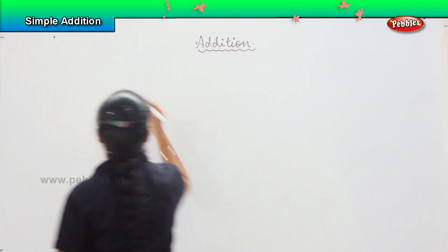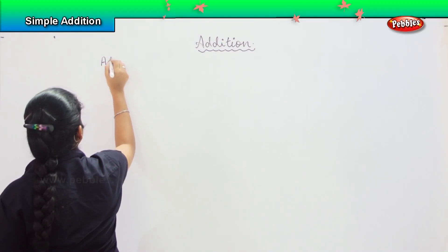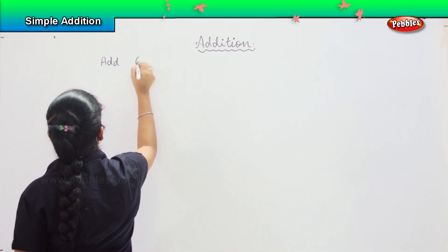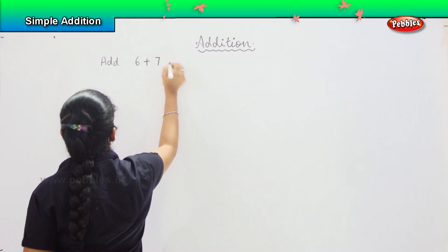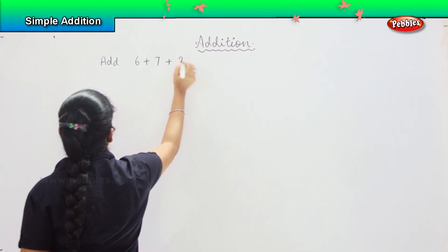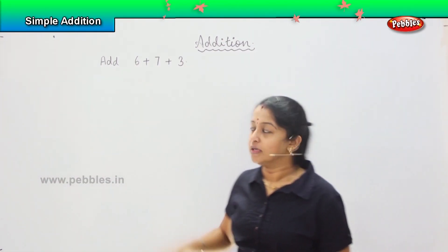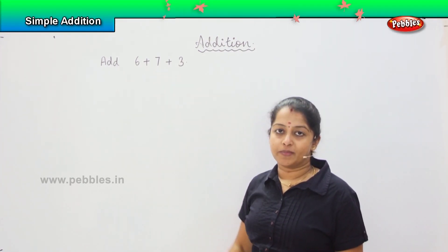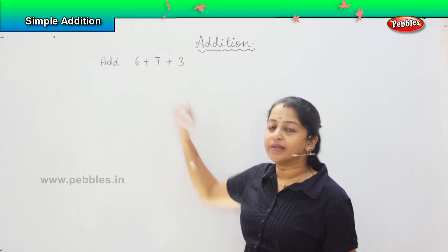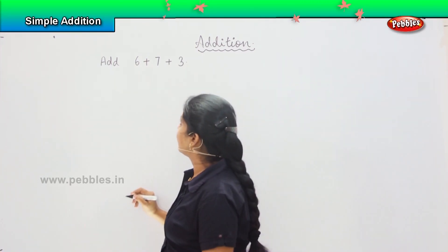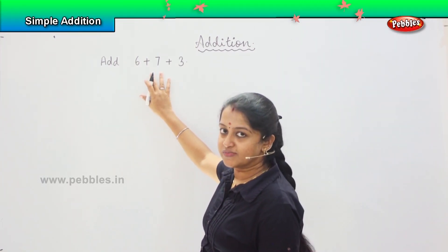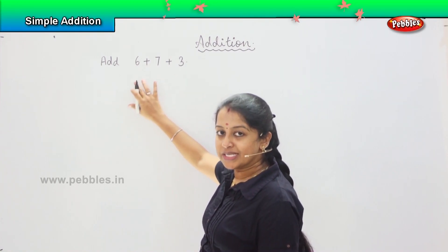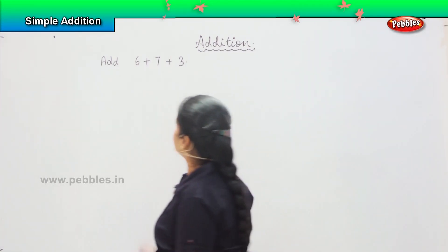So your sum is add 6 plus 7 plus 3. This pattern we are going to follow the last property which we have learnt, that is we will be regrouping it. So how you can regroup, you can combine two numbers first and then whatever answer we get from that, we can add the third one.